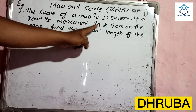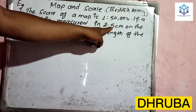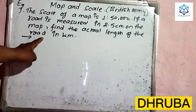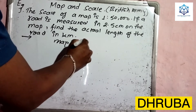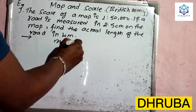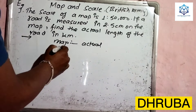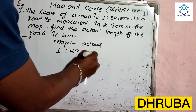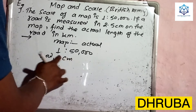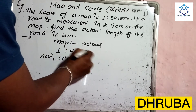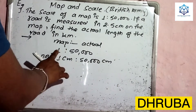Map is 2.5 cm. The actual length of the road uses the scale 1 to 50,000. Map versus actual ratio: 1 to 50,000. So if 1 cm on the map equals 50,000 cm in actual length.